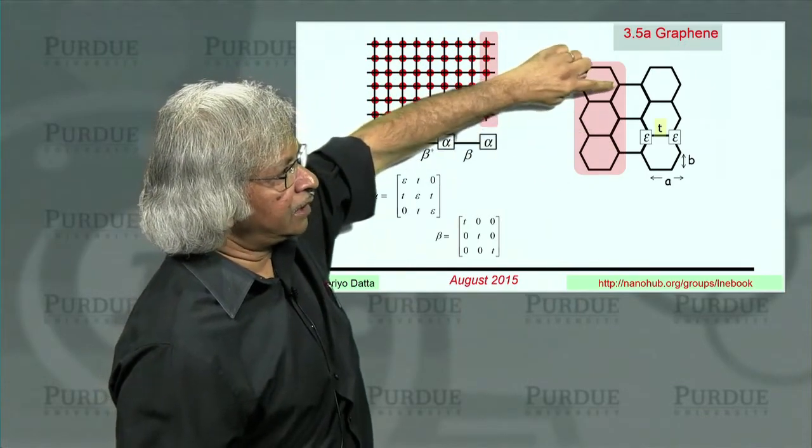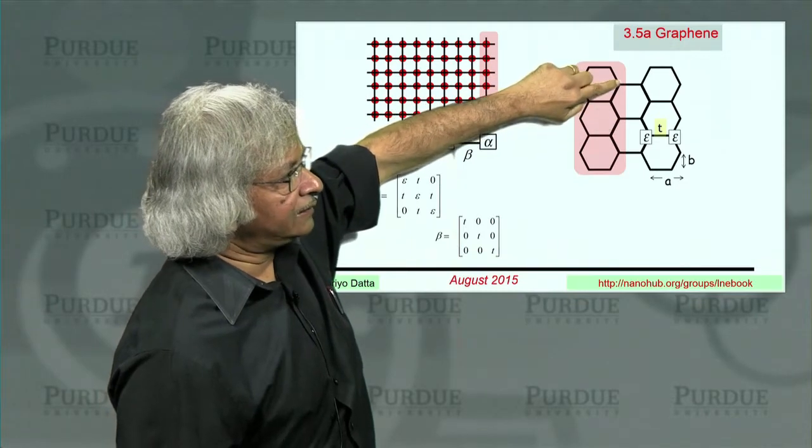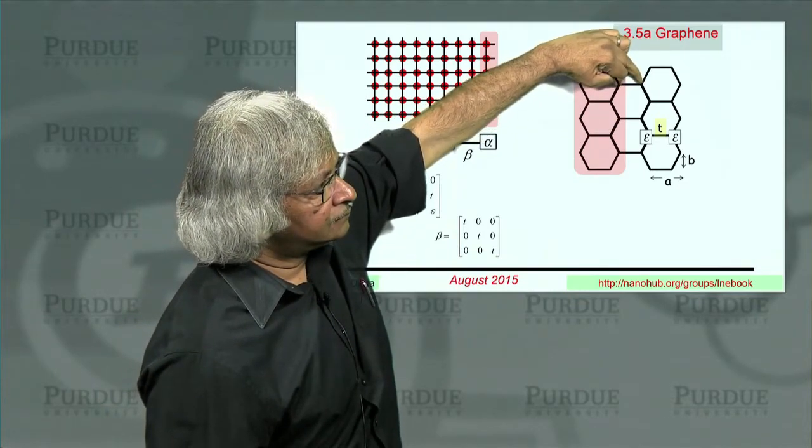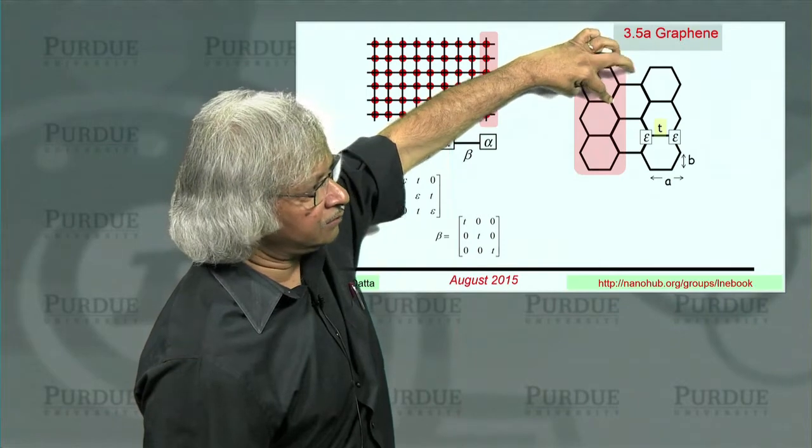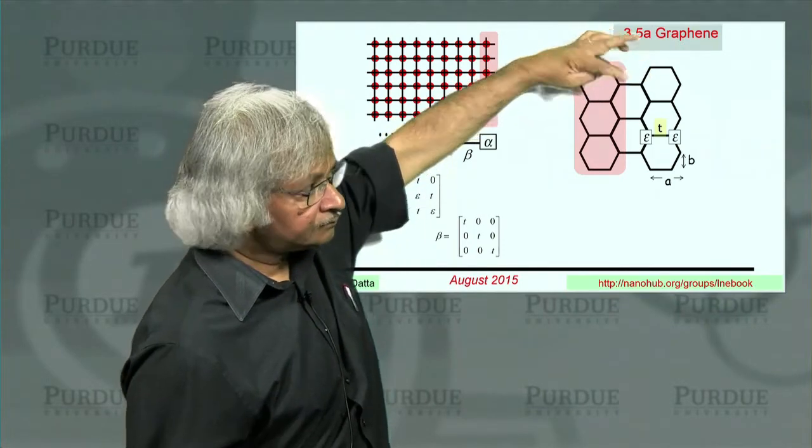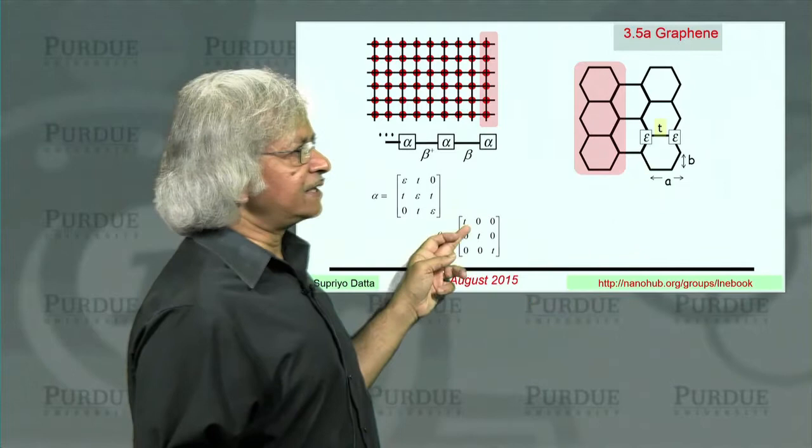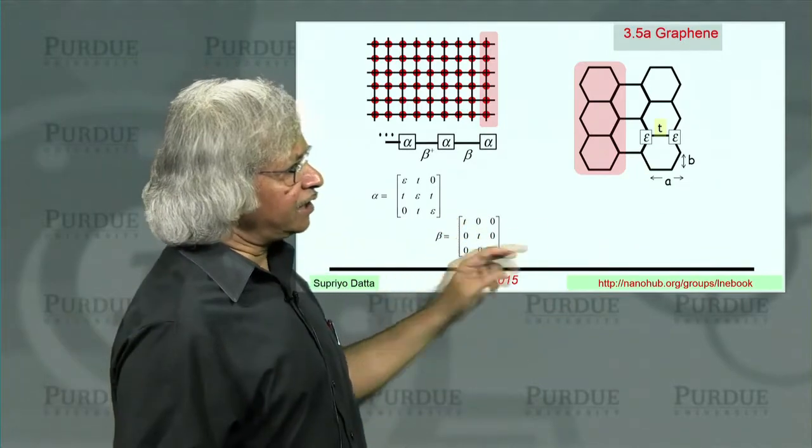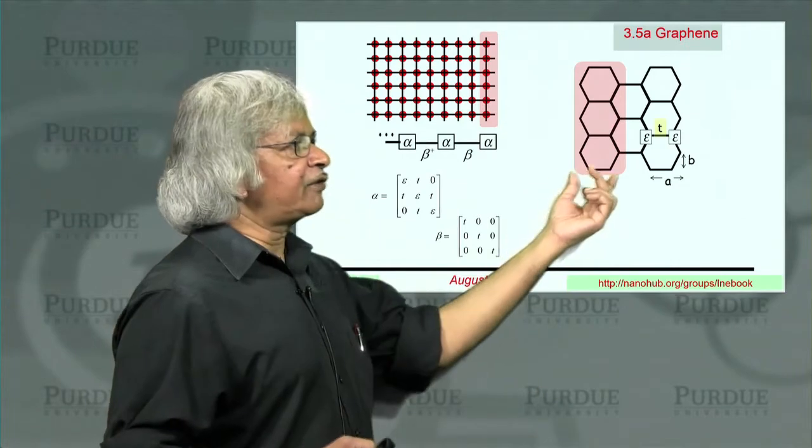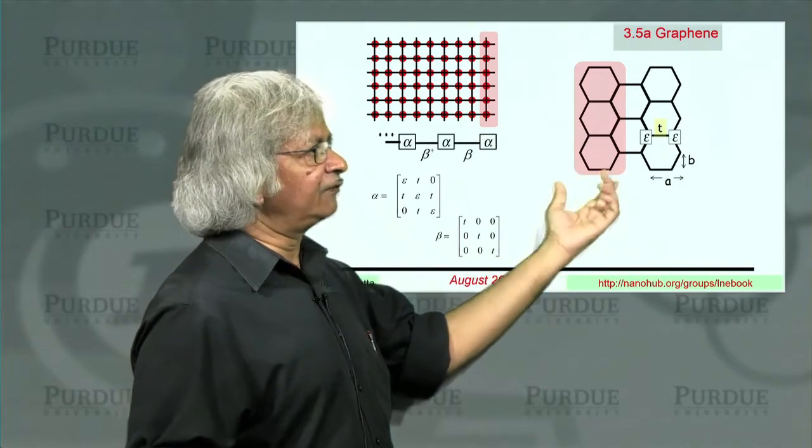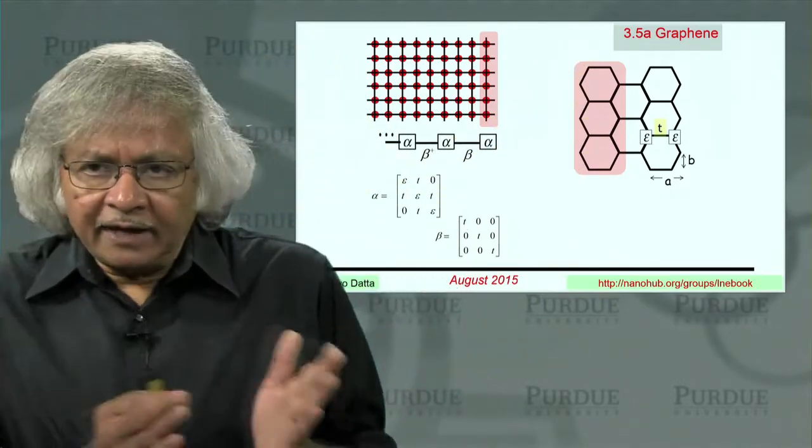Now in this case, beta is not an identity matrix. Here beta was an identity matrix because every element in this column was connected to a corresponding element in that column. So 1 got connected to 1, 2 got connected to 2, 3 got connected to 3, and equally. Here it isn't quite like that. When you look at this column, you got many elements here, and this one is connected to that one. But this one is not connected to anything directly.